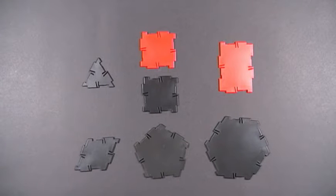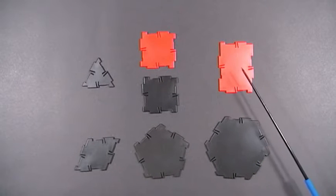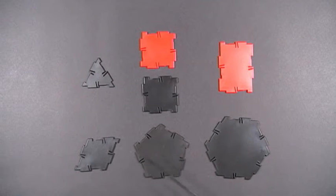Here are the different Polydron shapes that are included in the Prism Set: Small Equilateral Triangle, Square, Rectangle, Rhombus, Pentagon, and Hexagon.